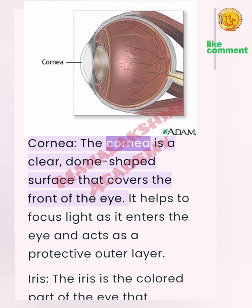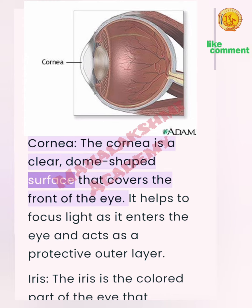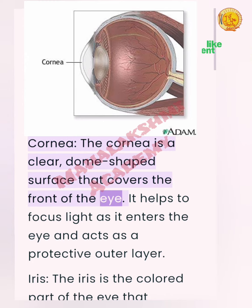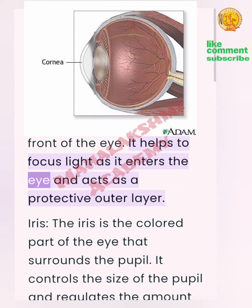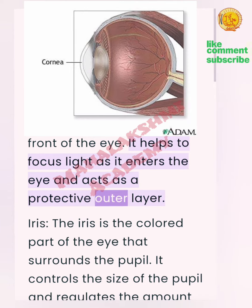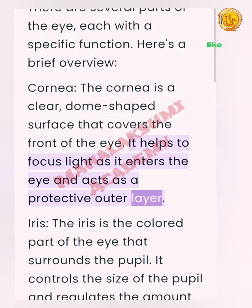Cornea: The cornea is a clear, dome-shaped surface that covers the front of the eye. It helps to focus light as it enters the eye and acts as a protective outer layer.